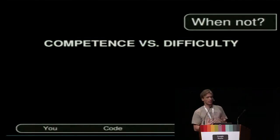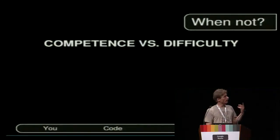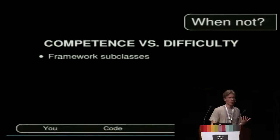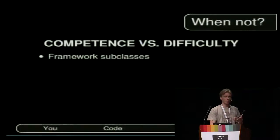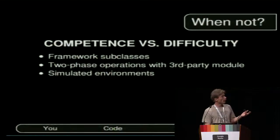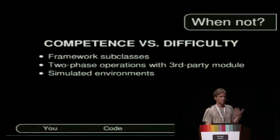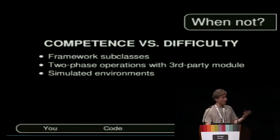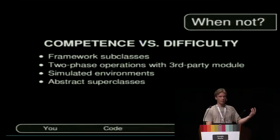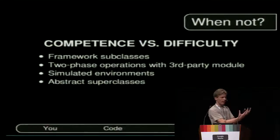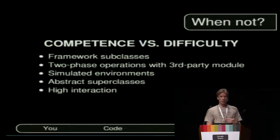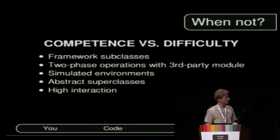Now we have the concept of the difficulty of testing. Things that are very difficult to test include: framework subclasses like Django generic views, where the class is a combination of class variables and mix-ins; anything asynchronous; simulated environments like a mobile platform where you have to mock a lot; abstract subclasses that evolve before you really know what they're supposed to do; and everything that has high interaction, meaning a lot of mocking — and a lot of mocking always means a lot of complexity.